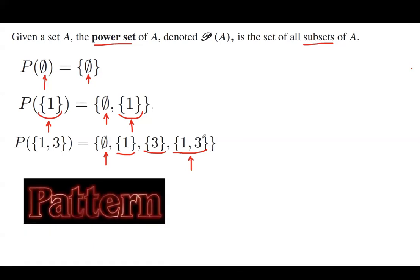Do we see any pattern here? It seems like it follows 2 to the power n, where n is the number of elements in that set. Since we don't have anything in the empty set, 2 to the power 0 equals 1, and the power set of the empty set has only one member. For the set with one member, 2 to the power 1 gives 2. For the set with two members, 2 to the power 2 is 4, so we expect to see four members — which is true.